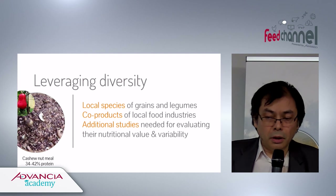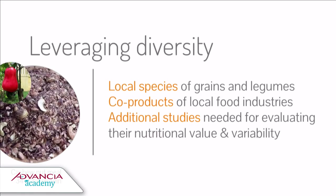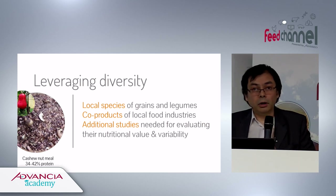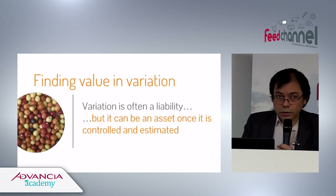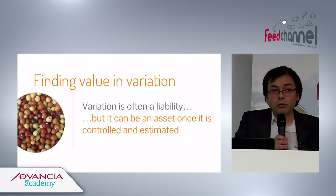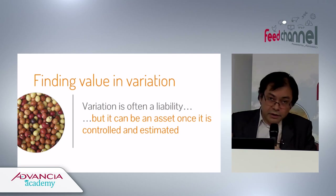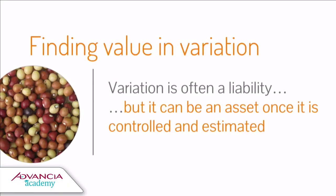It is possible to leverage this diversity by looking at local species, grains, legumes, and local by-products. These are less well known than maize or soybean meal, so analysis and evaluation of their value and variability are needed. For instance, cashew nut meal is a very interesting product with more than 50% protein and low fiber — but it is not well known. Ultimately, variation exists and is very large, but once it is known, studied, and estimated, it can become an asset.